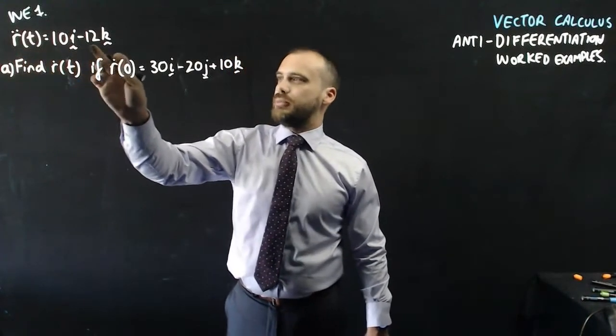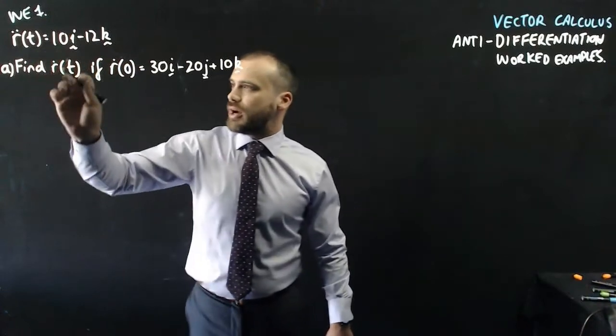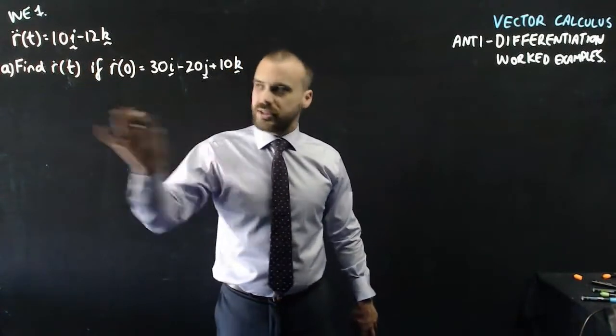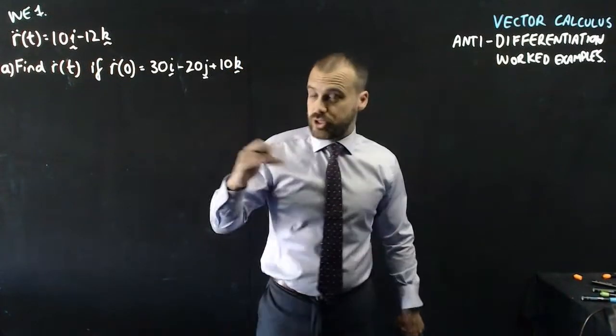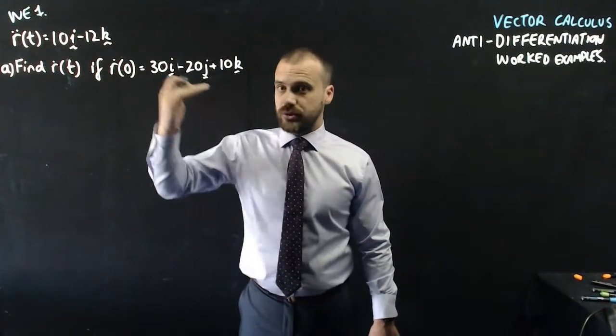R double dot t equals 10i minus 12k. Find R dot t. So we have to do some anti-differentiation because we're moving upwards through our differentiation.